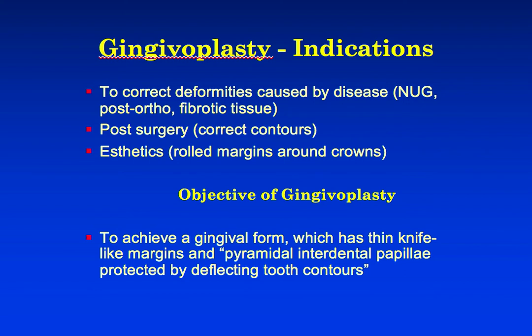Gingivoplasty can also be done if we have rolled thick margins around crowns of teeth, and can be performed to improve aesthetics. The objective of the gingivoplasty is to achieve a gingival form that has thin knife-like margins and pyramidal interdental papilla protected by deflecting tooth contours. This concludes our module on gingivectomy and gingivoplasty.